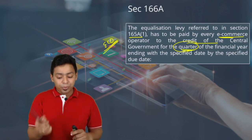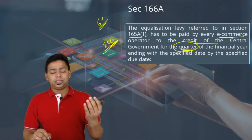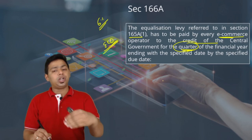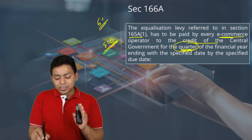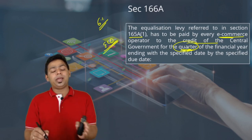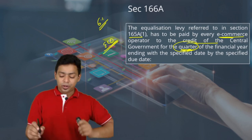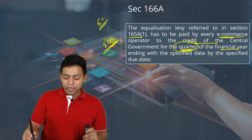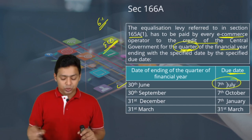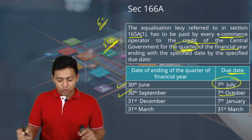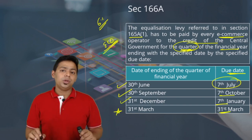Compare this with Section 166: for 6 percent services, the payer deposits like TDS — by the 7th of the following month. But for e-commerce operators at 2 percent, the obligation is quarterly. The due dates to remember: for Q1 ending 30th June — 7th July; for Q2 ending 30th September — 7th October; for Q3 ending 31st December — 7th January; and for Q4 ending 31st March — 31st March itself.